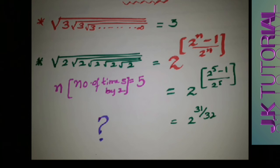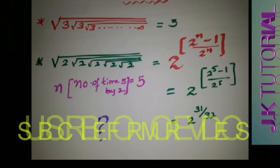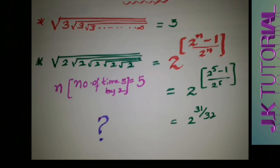Now we'll see Model 3, where all operations are multiplication. The square root of 3 times the square root of 3 times the square root of 3, and so on to infinity — the answer is simply the same number, which is 3. Similarly, the square root of 5 times itself to infinity gives 5, and the square root of 42 multiplied to infinity gives 42.